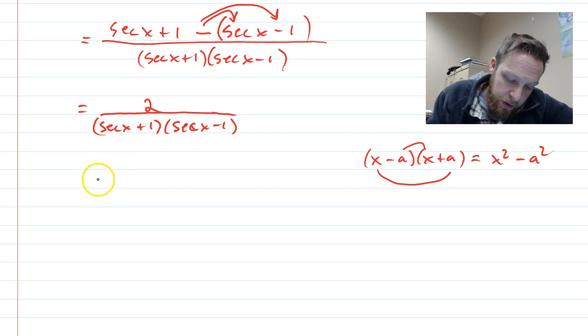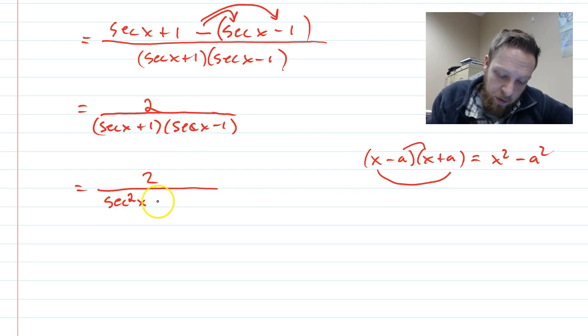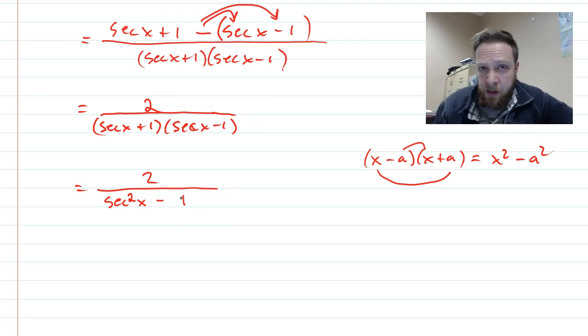So in this case, we are going to end up with secant times secant, which is secant squared x, and then we're going to have a minus one, because when we do the outside-inside part of the foiling, it's going to cancel out.